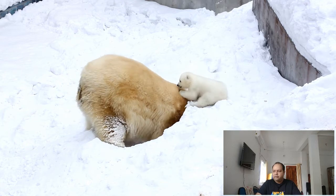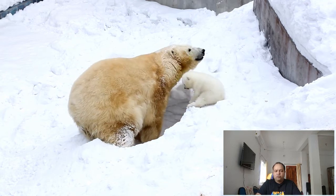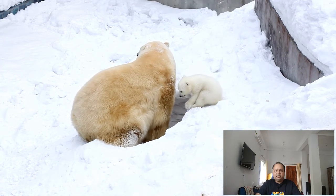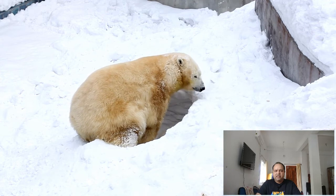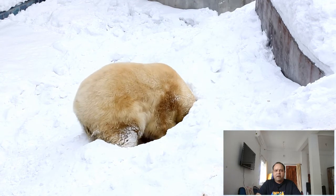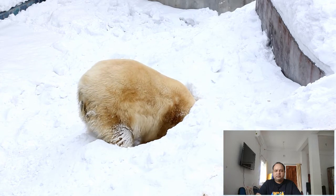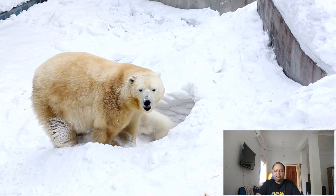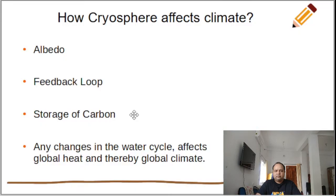Storage of carbon: the permafrost of the polar region has trapped tons of carbon. If the feedback loop aggravates, this carbon will be released in the form of methane, a powerful greenhouse gas, which will catalyze global warming. Melting of the cryosphere also affects the volume of water in the oceans.